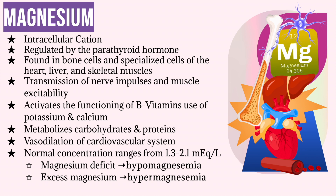Magnesium enters the body through the gastrointestinal tract, is regulated by the parathyroid hormone, and is excreted out of the body by the kidneys. So how does magnesium function in the body?